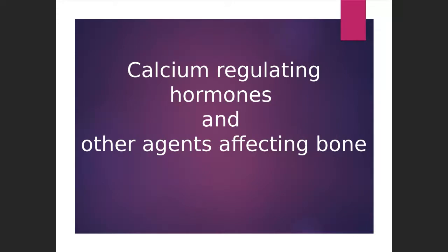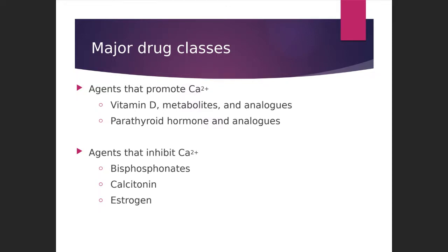Coming to the first lecture about calcium and related drugs. In this lecture, we are going to study about calcium, the importance of calcium, what will happen if the levels of calcium are increased in the body, and what will happen if the levels of calcium are decreased in the body and how to manage these conditions. We are also going to study about the different disorders or diseases which are related to imbalance in the calcium levels in the body. There are two different types of agents: those which help to absorb calcium in the body, and those which inhibit the absorption of calcium.